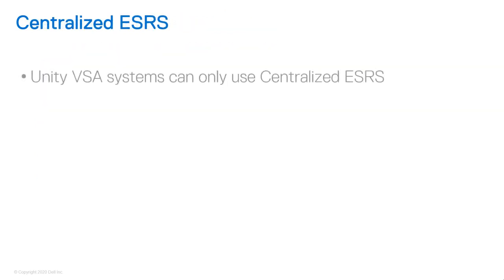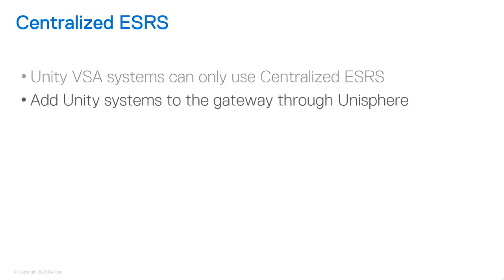If you have a Unity VSA system, you can only use centralized ESRS. Unity systems must be added to the gateway through the Unity Unisphere interface. Do not add Unity systems to the ESRS gateway server interface directly.